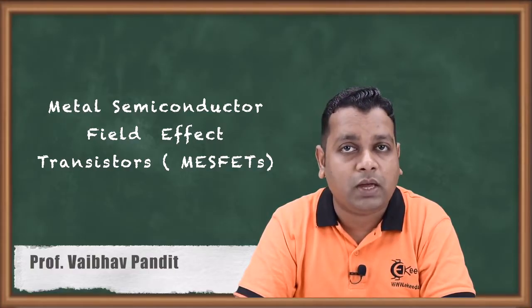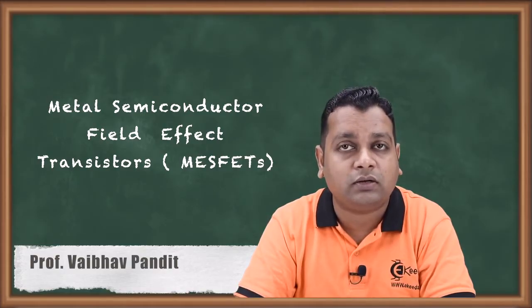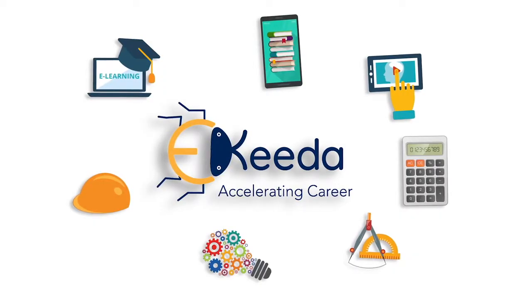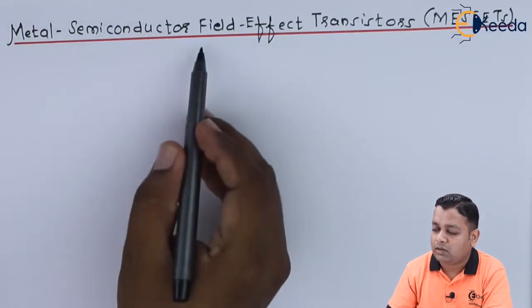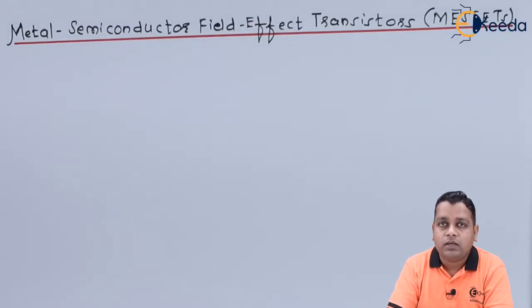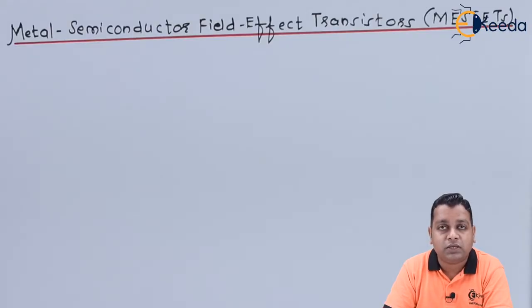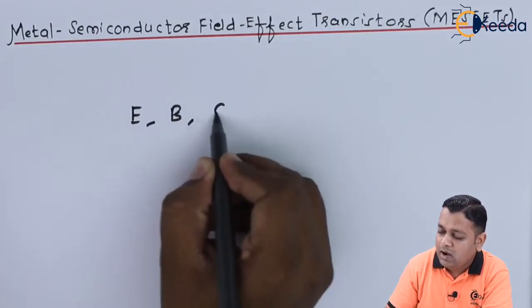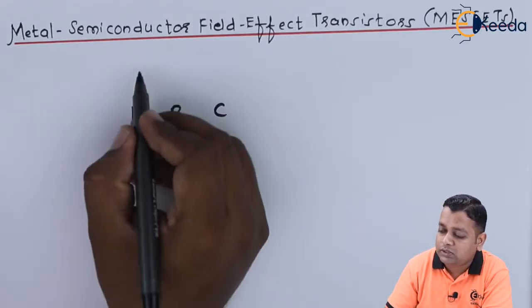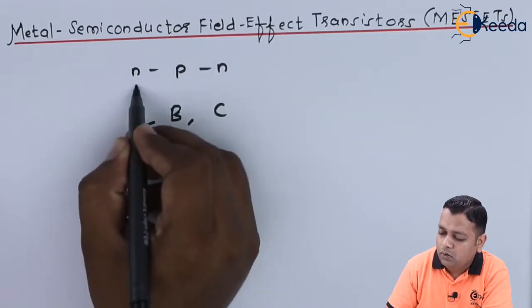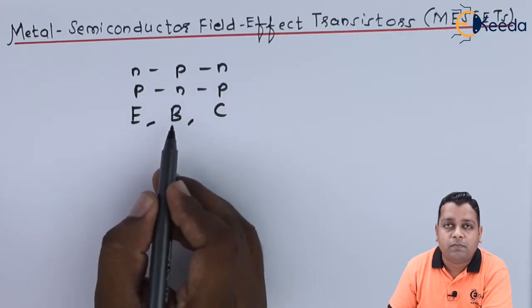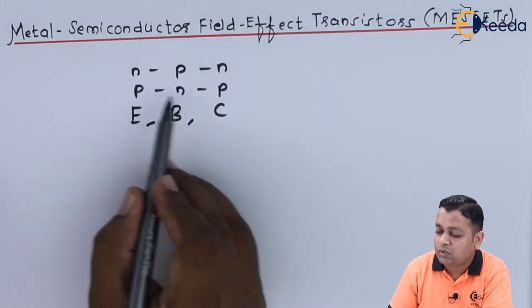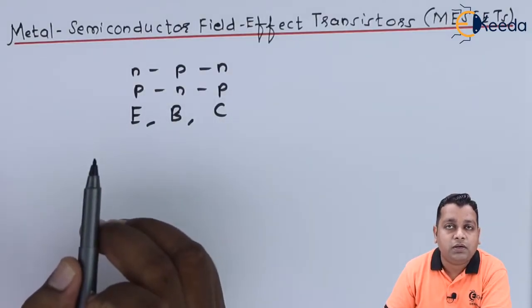Let us begin with the new topic in the family of microwave solid state devices: the metal semiconductor field effect transistor. In the family of microwave transistors, we initially had the BJT with three regions — emitter, base, and collector — in NPN or PNP configurations, where the base is sandwiched between the two semiconductor types.